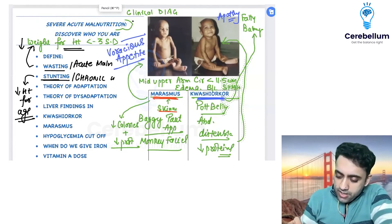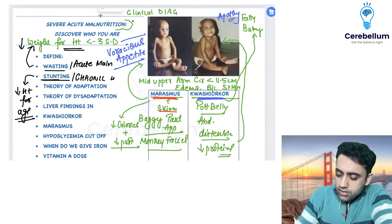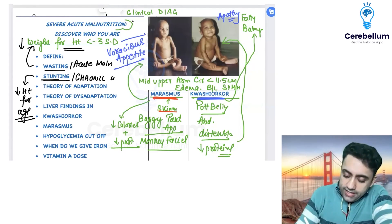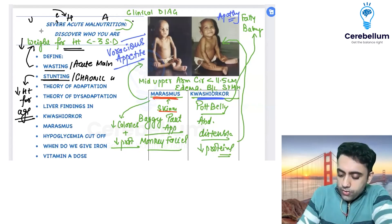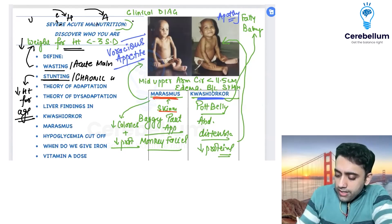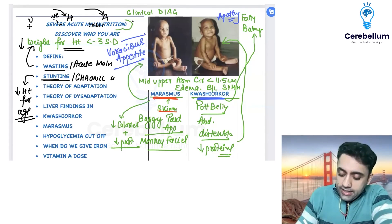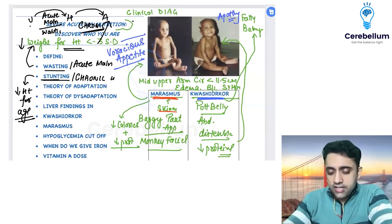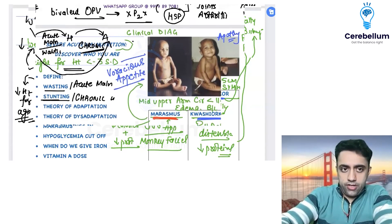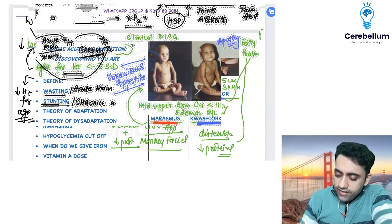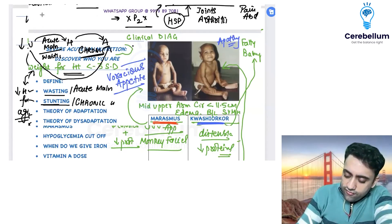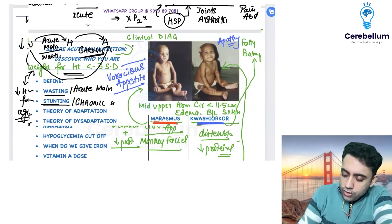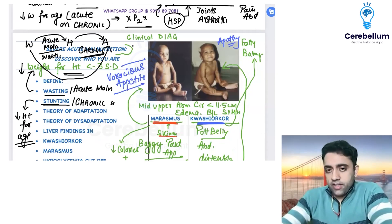Remember the mnemonic WHA: decrease in Weight-for-Height means acute malnutrition (wasting); decrease in Height-for-Age means chronic malnutrition (stunting); and decrease in Weight-for-Age means acute-on-chronic malnutrition.